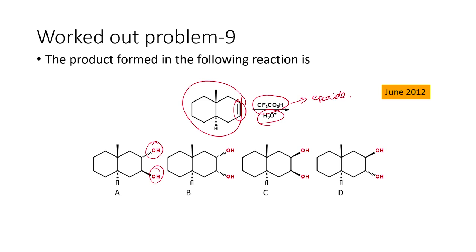The epoxide is opened up by the acid catalyst, leading to the formation of the dihydroxy derivative. If you look at all four compounds, all four have the dihydroxy unit present. The only difference is whether they are in the cis orientation or in the trans orientation — that is the only difference present here.